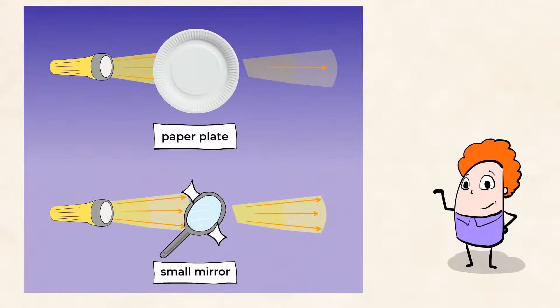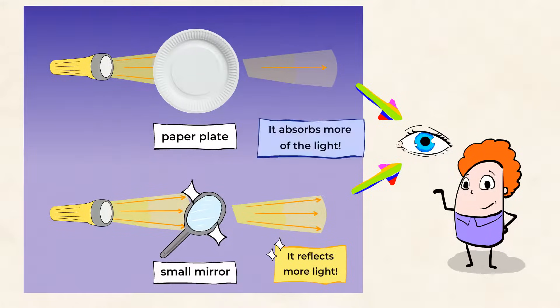Some of the light is reflected into our eyes, making us able to see the paper plate, but the plate is not as shiny as the mirror, and so it absorbs more of the light. When an object has a rough or bumpy texture, like the paper plate, less light is reflected off of that object and into our eyes, making it harder to see in the dark room.